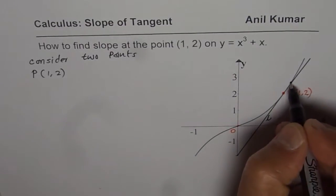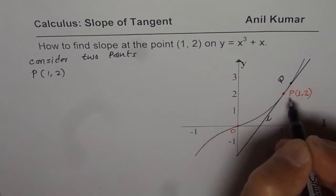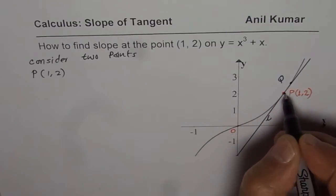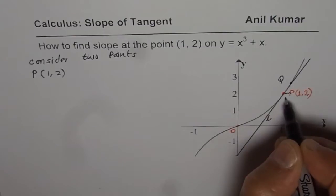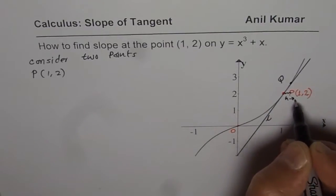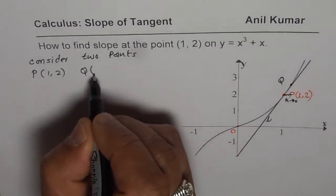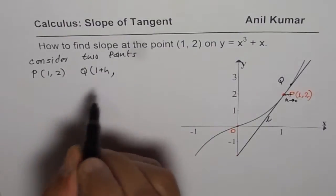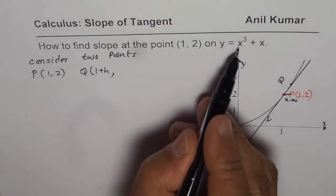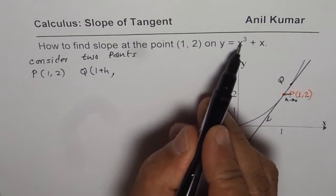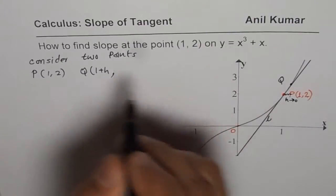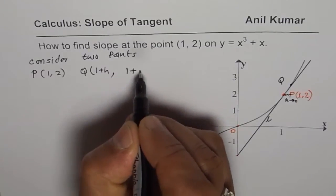We will assume the next point Q to be very close to P, so that the x value is just h away, where h is approaching 0. So the x value for Q is 1 plus h. In that case, the y value — we can replace x with 1 plus h in the equation x cubed plus x.